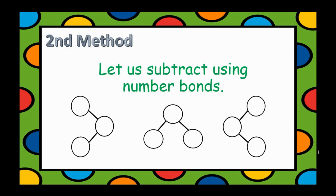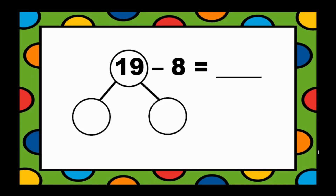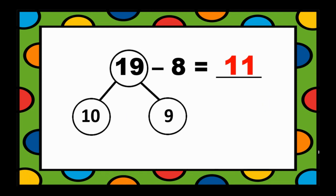Here is the second method. Let us subtract using number bonds. We have 19 minus 8. First, we will use the number bonds to make 19 — 10 and 9 will make 19. Then, we subtract the 1s: 9 minus 8 equals 1. We add that result to the tens digit, which is 10. So, 10 plus 1 equals 11. Therefore, 19 minus 8 equals 11.